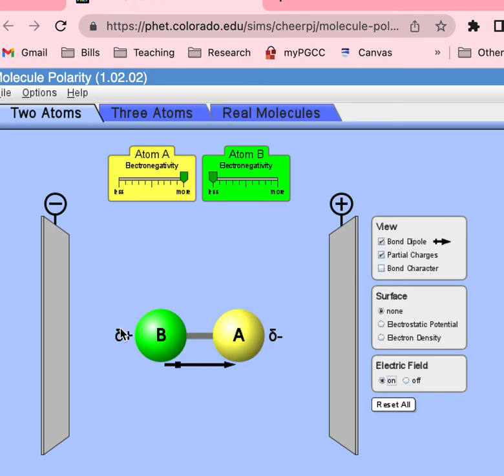Something we don't talk about too much in this class but is true, and something you'll talk about in later classes, is that this configuration with the negative close to the positive and the positive close to the negative is the lowest energy configuration.